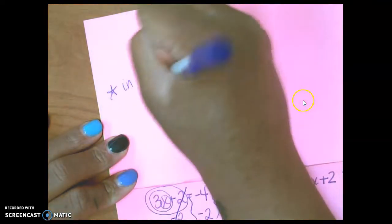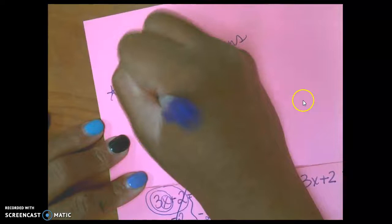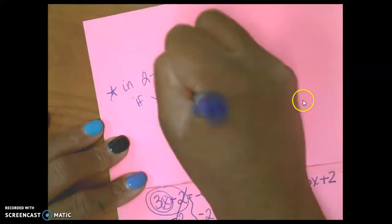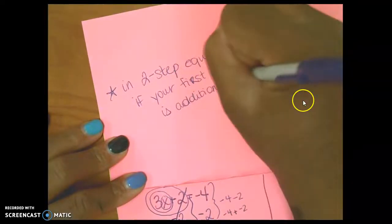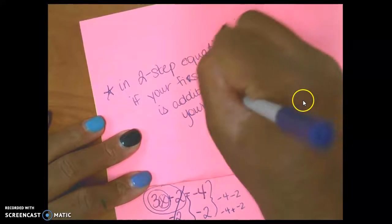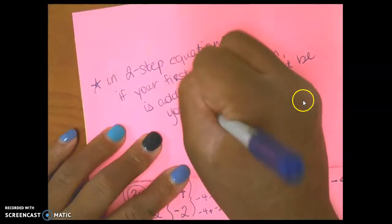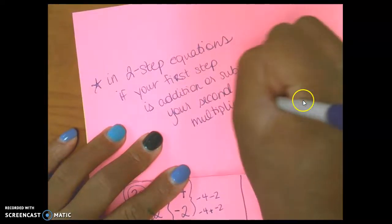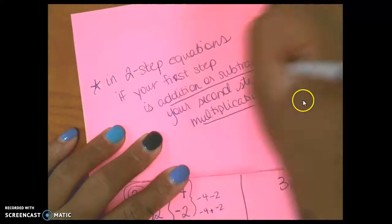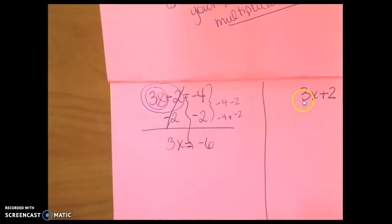So, make a little note up here. In two-step equations. If your first step is addition or subtraction, your second step must be multiplication or division. They go hand-in-hand, guys. Multiplication and division, addition and subtraction. Therefore, I have already subtracted here. So, my next step is not going to be addition. My next step is not going to be a subtraction problem. It's going to be multiplication or division.